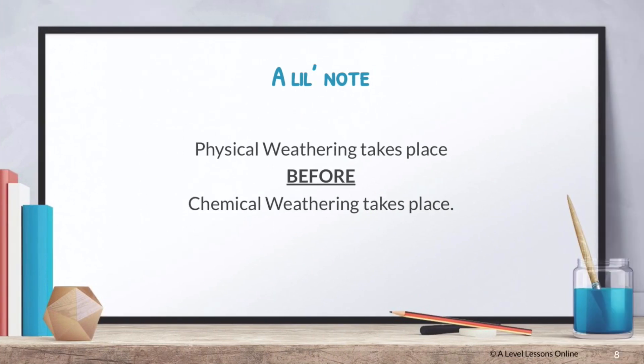Just a little note to take: physical weathering tends to take place before chemical weathering can take place, because when physical weathering takes place it actually creates a lot of cracks, joints, and fissures. This allows chemical weathering — the chemicals that fall into these joints — to do their work and exploit these cracks that physical weathering has caused. Hence they both work in conjunction thereafter.